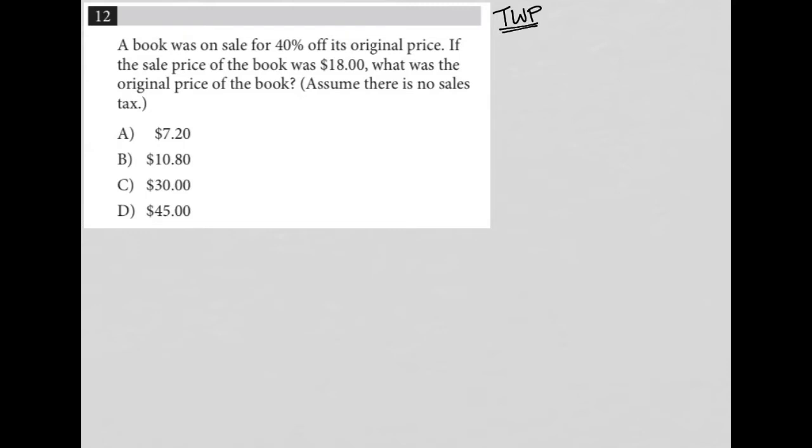So for that first sentence, I would say I don't know the original price. I'm going to call it X. But I do know that it's on sale for 40% off of its original price. So I could say the sale price is equal to the X original price minus 40%, which is 0.4 as a decimal, times that original price.